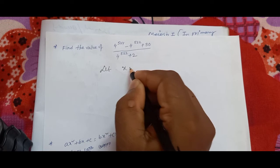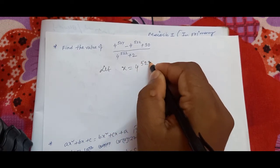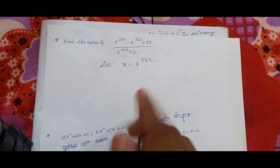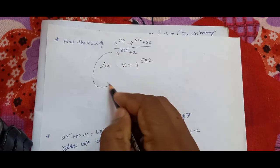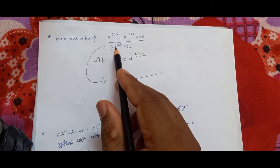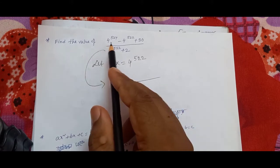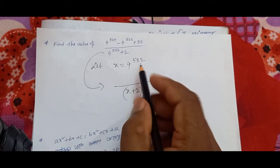Let x equal 4 to the power 5 to 2. Then we can write it: 4 to the power 5 to 4 equals x times 4 squared, which is x times 16.